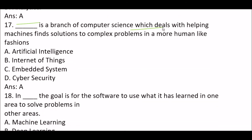Next question: blank space is a branch of computer science which deals with helping machines find solutions to complex problems in a more human-like fashion. Option A: artificial intelligence. Option B: internet of things. Option C: embedded systems. Option D: cyber security. The right answer is Option A — artificial intelligence. This is also the definition of AI.